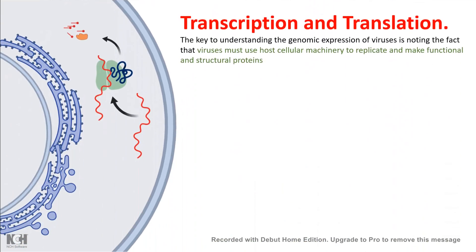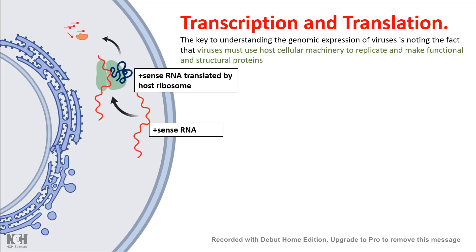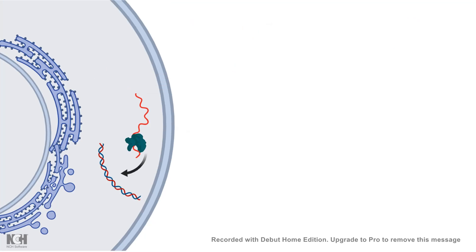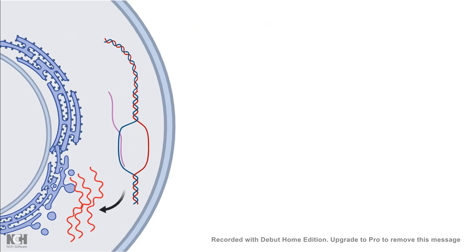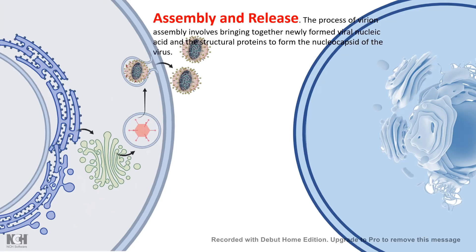Once inside the host cell, the virus first makes several viral proteins including capsid and matrix proteins. This plus-sense RNA is directly taken up by the ribosome and processed for protein synthesis. The virus then replicates its own genetic material, and ultimately more viral production and assembly takes place inside the host cell, before the virus moves on to infect another uninfected cell.